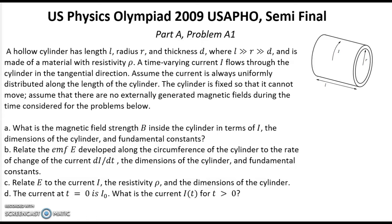Question A: What is the magnetic field strength B inside the cylinder in terms of I, the dimensions of the cylinder, and fundamental constants? Question B: Relate the EMF E developed along the circumference of the cylinder to the rate of change of the current dI/dt, the dimensions of the cylinder and the fundamental constants. Question C: Relate E to the current I, the resistivity rho and the dimensions of the cylinder. Question D: The current at t equals 0 is I0. What is the current I as a function of time for t greater than 0?